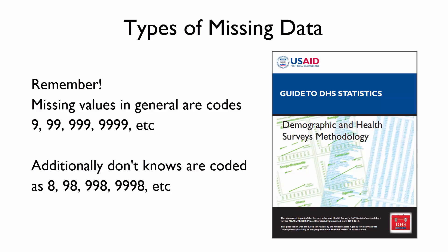Remember that missing values are usually coded as a very high number. In general, the codes for missing values are 9, 99, etc. It is always important to understand how missing values are handled in your analysis so that you are able to match the final reports. Additionally, don't forget that don't knows are coded as 8, 98, etc.